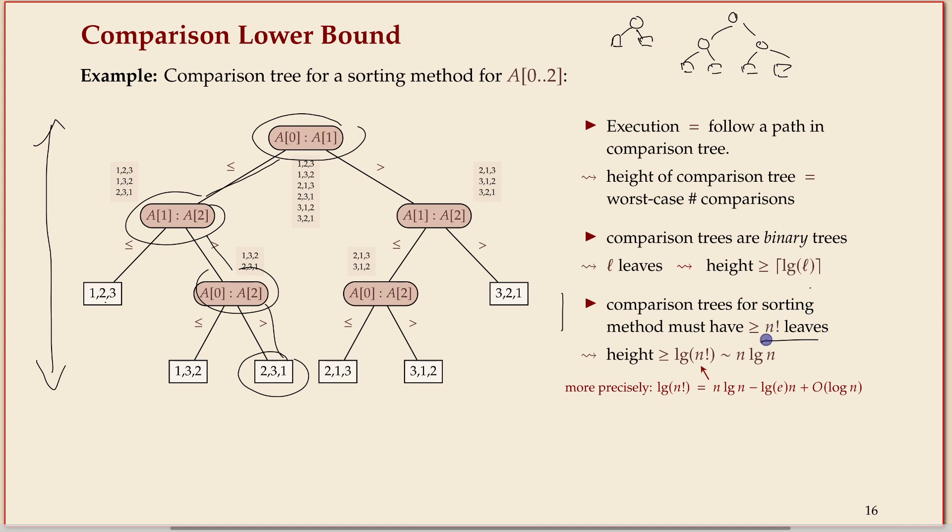So that means if we want to sort n elements, we have to have n factorial leaves. We know for so many leaves we need log of that as height. And log of n factorial is roughly n log n. You can upper bound and lower bound it. To be more precise, you can give statements like this, but that's not my key point. It's enough if you keep that in mind and that it's asymptotically equivalent to n log n.